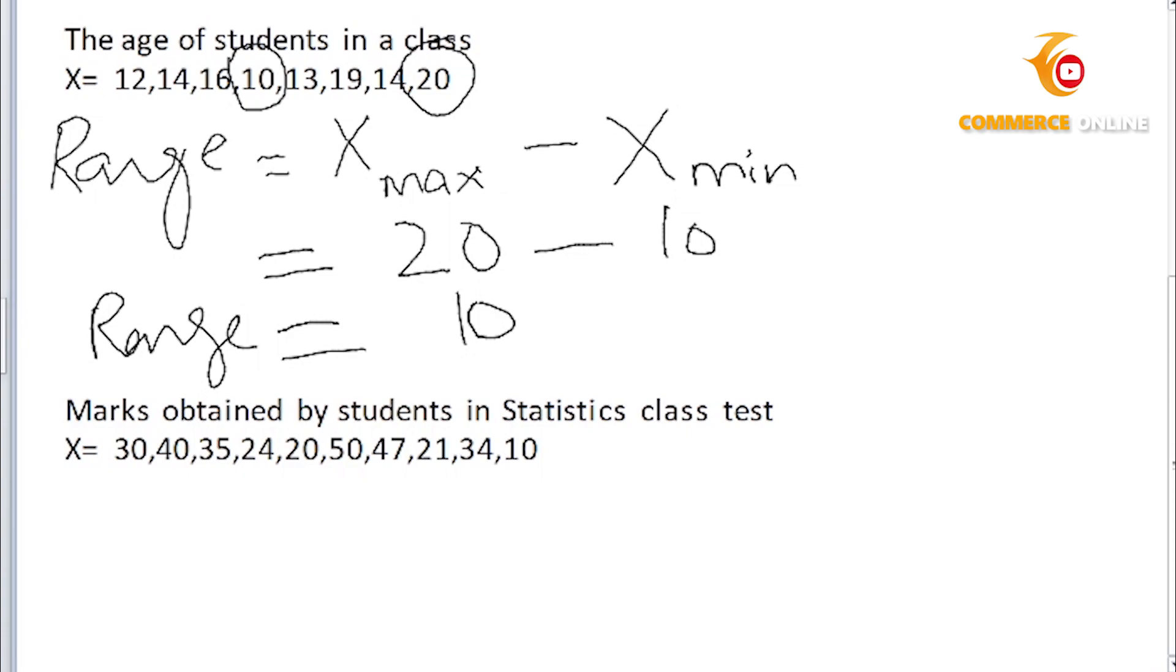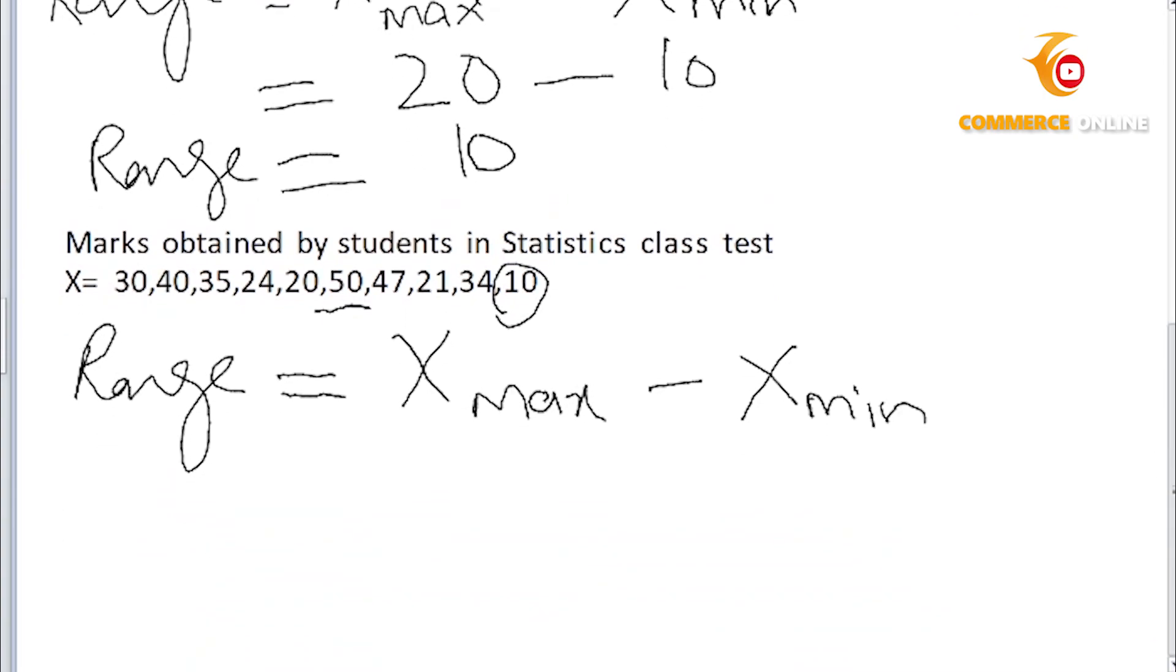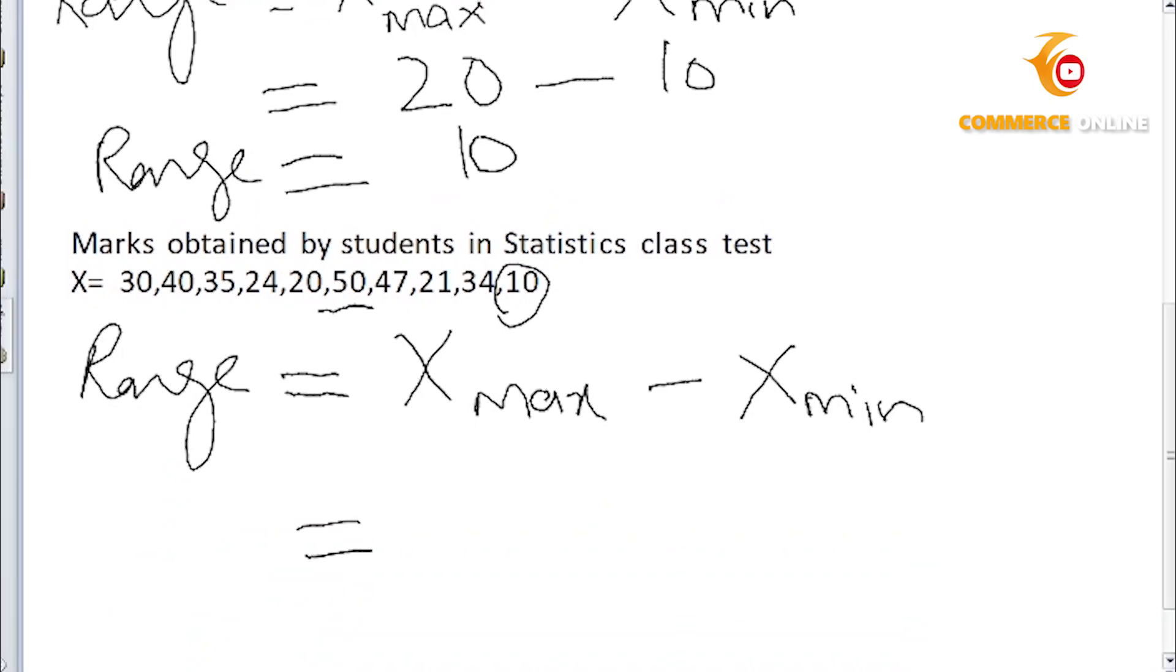Once again, first we will find out the highest value, which is 50, and the lowest value, which is 10. We use the formula: Range equals X max minus X min. X max is 50 and the minimum value is 10, so we have range equals 40.